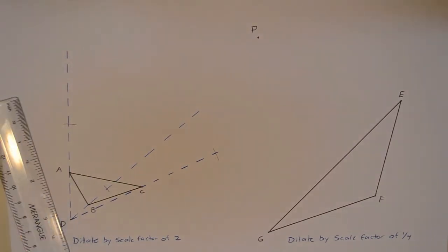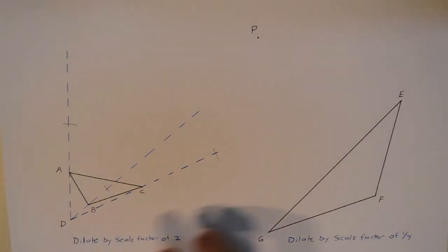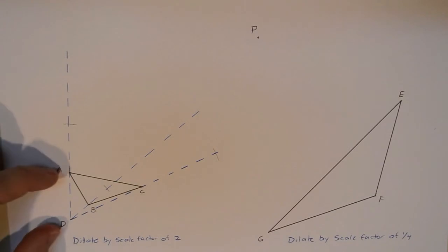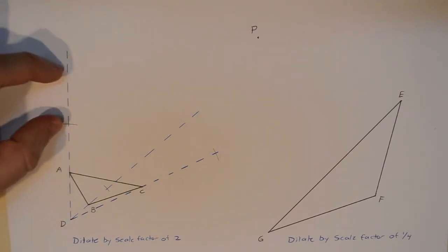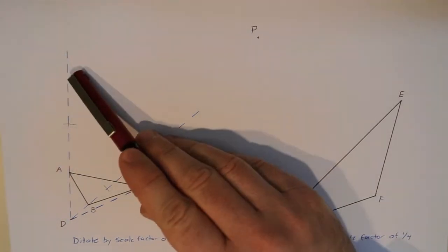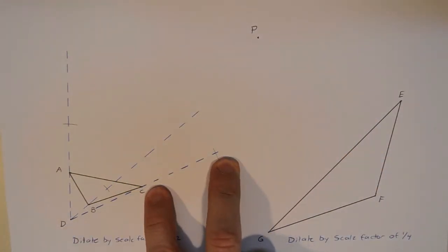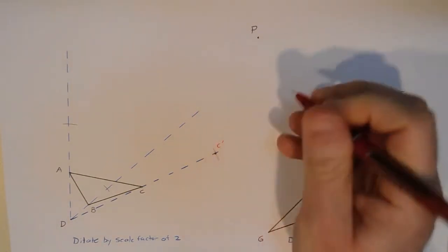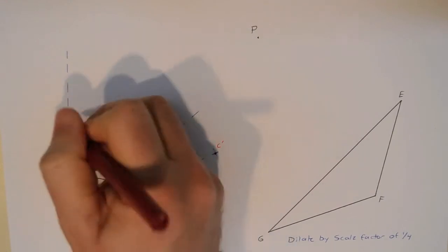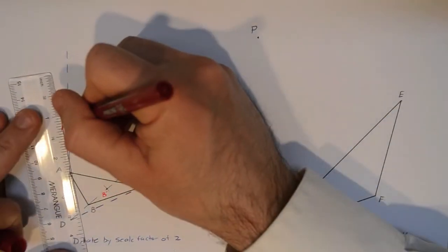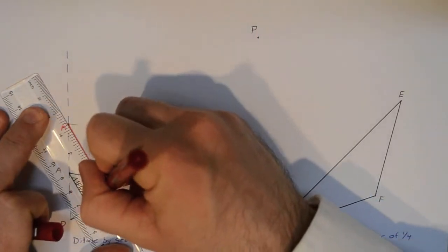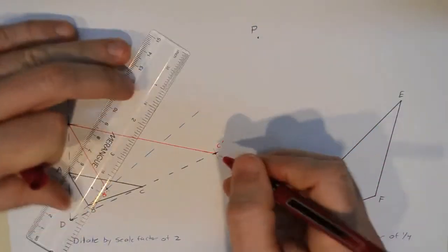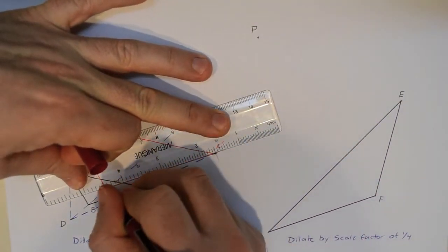Notice that B prime is going to end up inside the original triangle - that's totally fine, nothing wrong with that. If I had dilated by a larger scale factor, say 3, that would have pushed the points further out. We can now label these points: this is C prime, this is B prime, this is A prime. Then we connect those points - I'm using red just to show that this is the new triangle after the dilation, the image of triangle ABC.